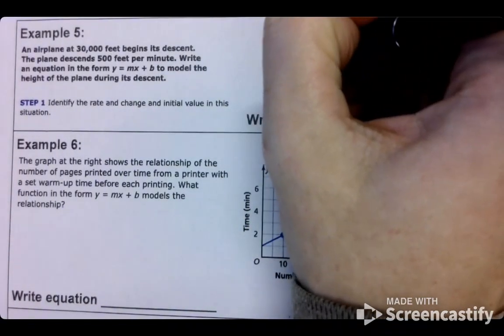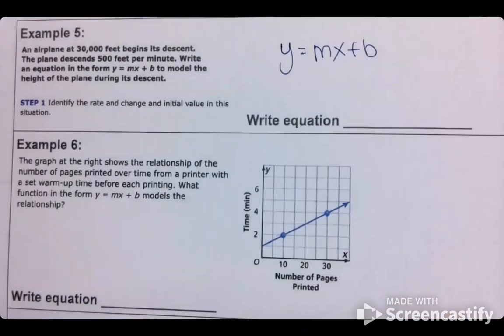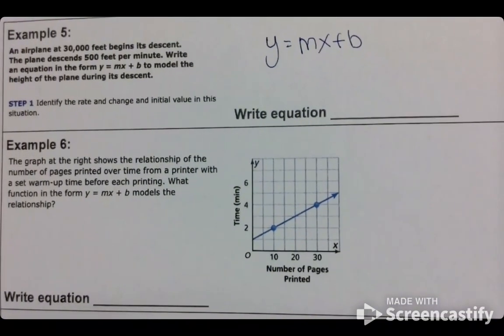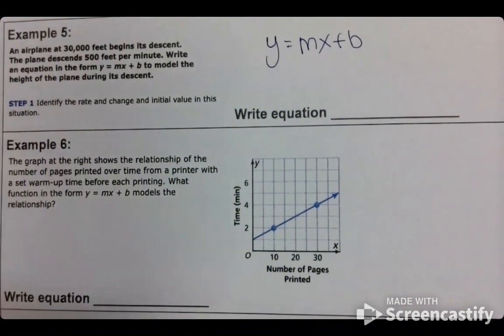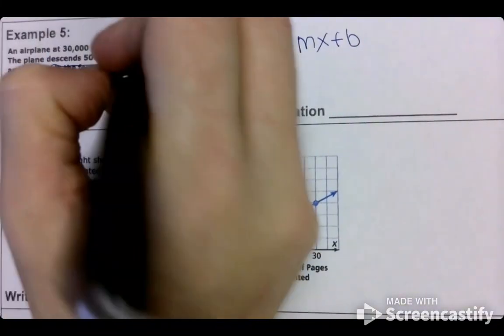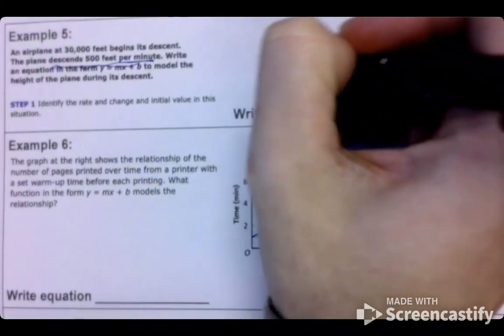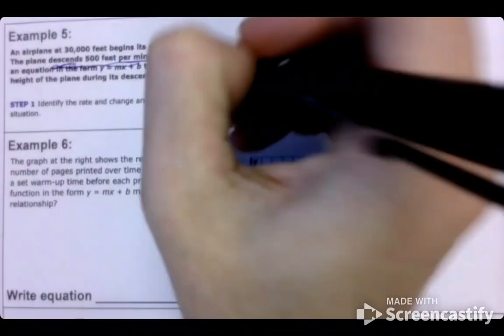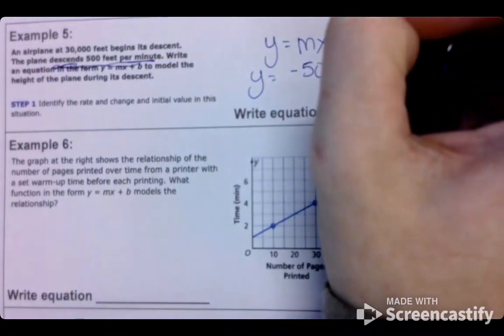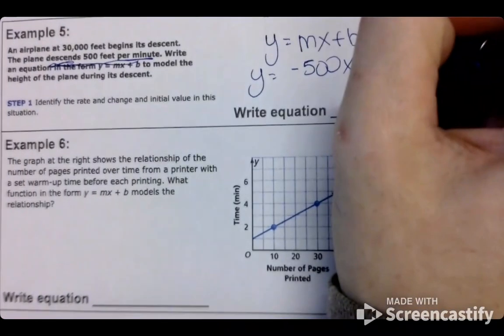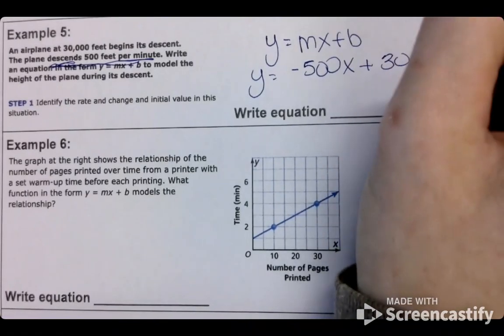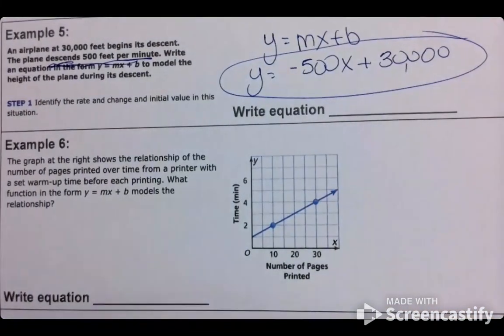Y equals MX plus B. What's going to go in place of M? That per minute should have been your clue. So we should have negative 500 because this says descends. And then what's our B? 30,000. All right.